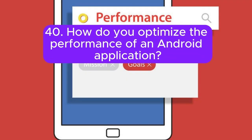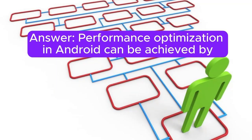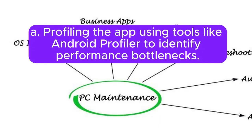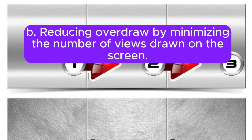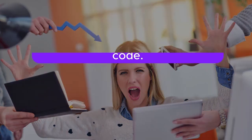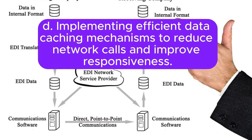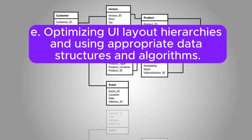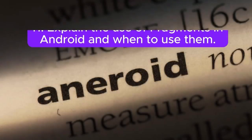Question 40: How do you optimize the performance of an Android application? Performance optimization can be achieved by: profiling the app using Android Profiler to identify bottlenecks; reducing overdraw by minimizing the number of views drawn on screen; using ProGuard to minimize APK size and obfuscate code; implementing efficient data-caching mechanisms to reduce network calls and improve responsiveness; and optimizing UI layout hierarchies and using appropriate data structures and algorithms.